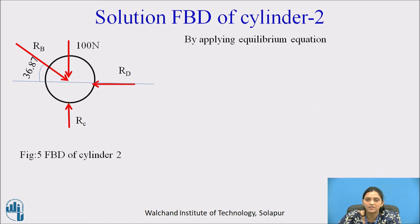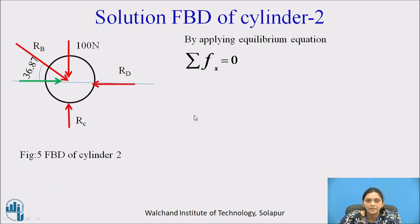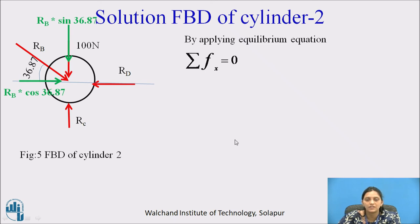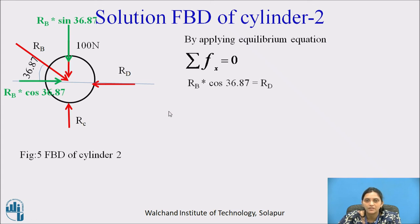Using summation FX = 0: RD and the horizontal component of RB (RB cos 36.87°) are in the X direction. Since they are in equilibrium, RB cos(36.87°) = RD. Substituting the value of RB gives RD = 133.32 Newton.